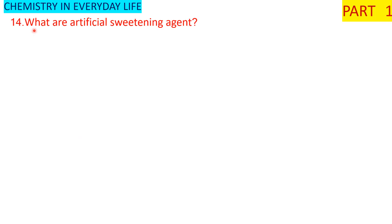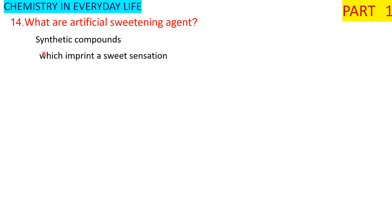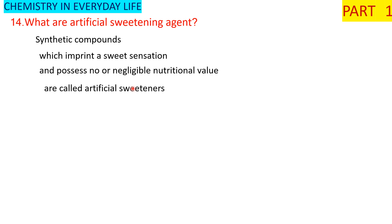What are artificial sweetening agents? Artificial sweetening agents are synthetic, man-made substances which impart a sweet sensation and possess no or negligible nutritional value. They are also called artificial sweeteners. Examples are saccharin and aspartame.